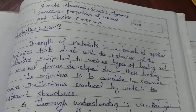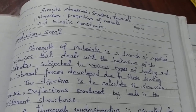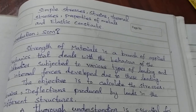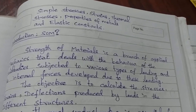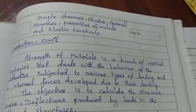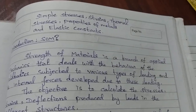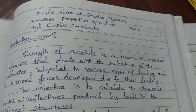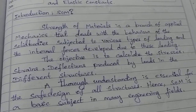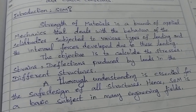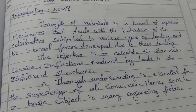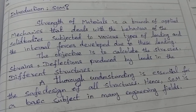Hello friends, I am going to talk about strength of material. In the first chapter: simple stresses, strain, thermal stresses, properties of metal and elastic constants — that is an introduction. Strength of material is a branch of applied mechanics that deals with the behavior of the solid body subjected to various types of loading and internal forces developed due to this loading.